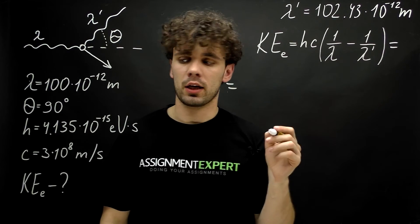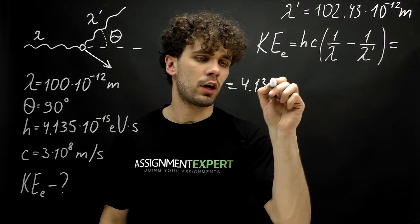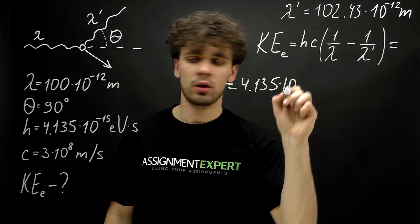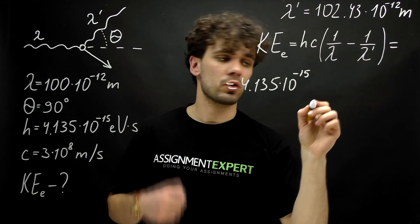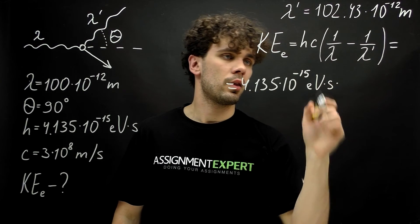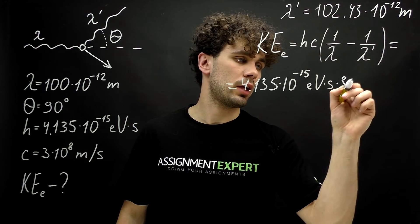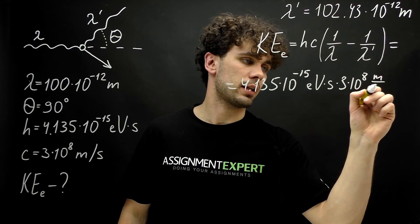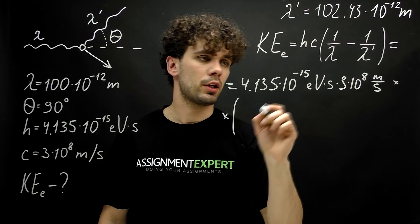First, we have the Planck constant: 4.135 times 10 raised to the negative 15th electron volts times second. Then we have the speed of light: 3 times 10 raised to the 8th power meter over second.